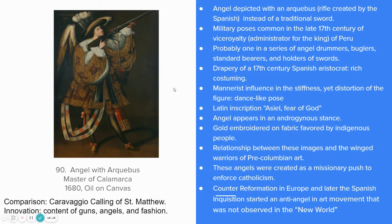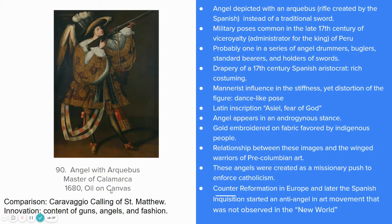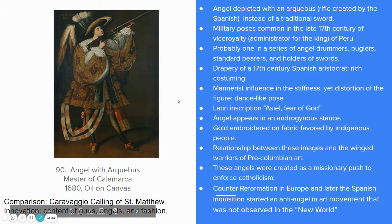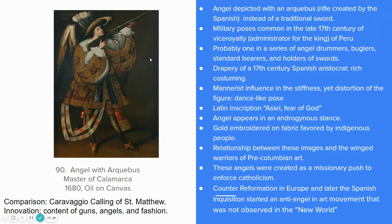Our next piece is image 90, Angel with Archibus, by the Master of Calamarca, from 1680, oil on canvas. The time period and medium should bring you to a direct connection with the Baroque style that was formally taught to the natives from the old world. What we have here is an angel depicted with an archibus — a rifle created by the Spanish — instead of a traditional sword. That's a new innovation, a change of imagery, altering some icons to fit these cultures.